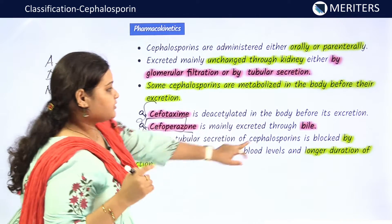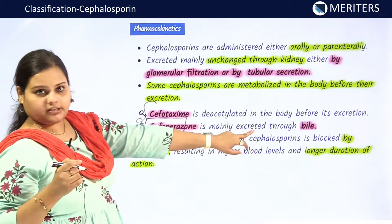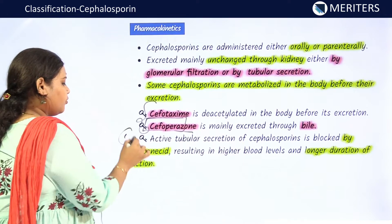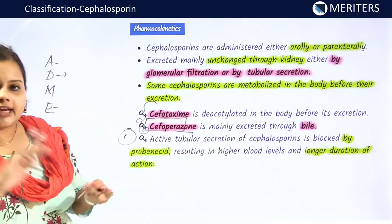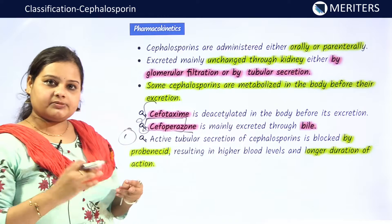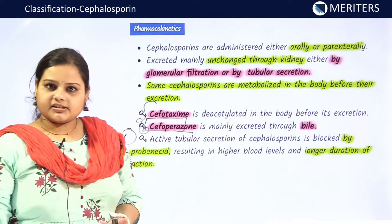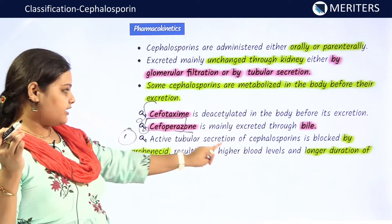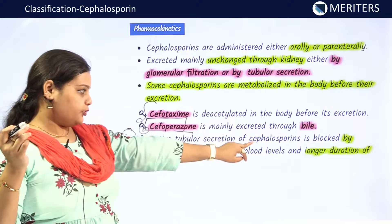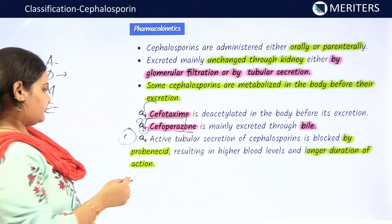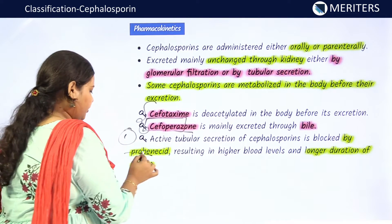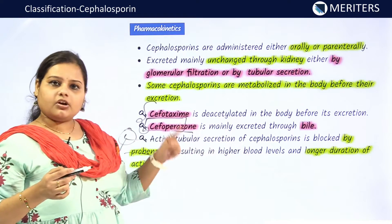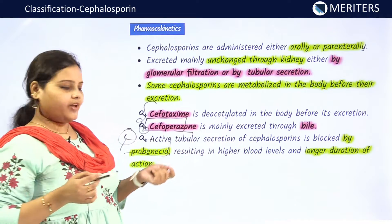Cefoperazone is mainly excreted through bile — remember this. Just as with penicillins, probenecid blocks the active tubular secretion of cephalosporins, resulting in higher blood levels and a longer duration of action.